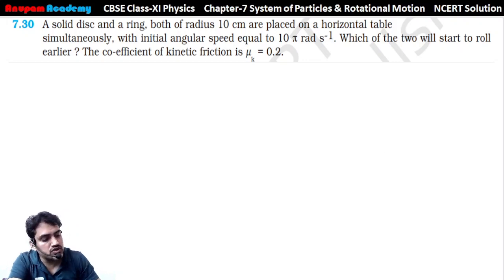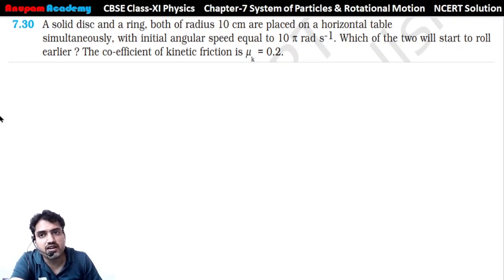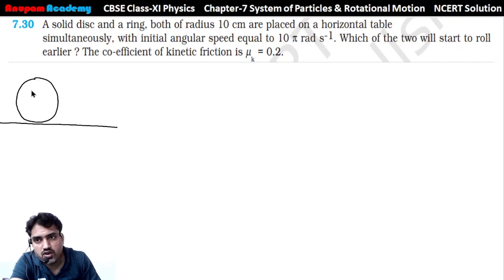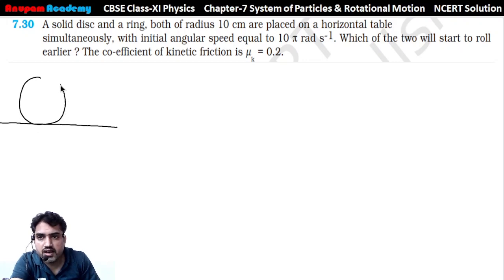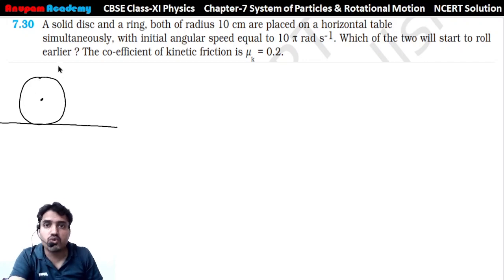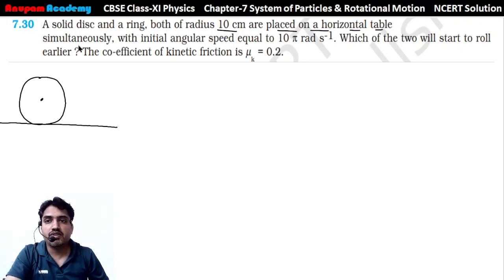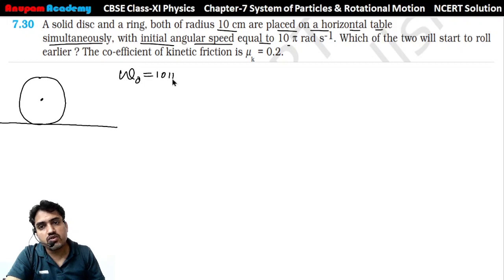Now question number 30 - a solid disk and a ring. Humare paas mein ek horizontal table hai. On this horizontal table, one solid disk and one ring are placed rotating. Both of radius 10 cm are placed on the horizontal table simultaneously with initial angular velocity 10π radian per second. So this omega naught initially is equal to 10π radian per second - ghoomte huye speed mein table pe rakh diya.